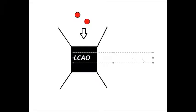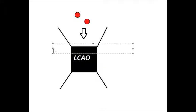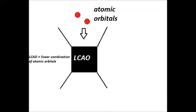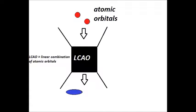The LCAO method takes a quantum mechanical view that atomic orbitals are really wave functions — electrons represented by wave functions. We can add or subtract certain fractions of these atomic orbitals to yield a molecular orbital. So we take two atomic orbitals, put them into our LCAO black box, do a little arithmetic, and out the other side we get two molecular orbitals. Two atomic orbitals in, two molecular orbitals out — a bonding orbital and an anti-bonding orbital.